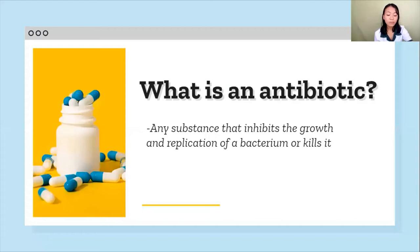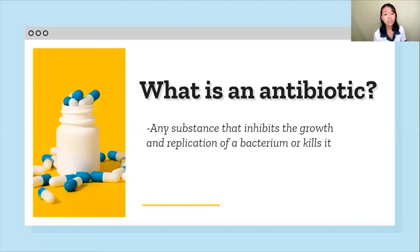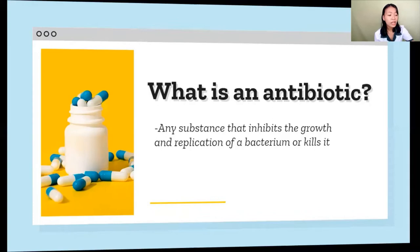Let us start by defining what an antibiotic is. An antibiotic is any substance that inhibits the growth and replication of a bacterium or kills it outright. Antibiotics are a type of antimicrobial designed to target bacterial infections within or on the body. This makes antibiotics different from antiseptics and disinfectants. Bacteria are not the only harmful microbes — fungi and viruses are targeted by antifungals and antivirals, respectively. Only substances that target bacteria are called antibiotics, while antimicrobial is an umbrella term for anything that inhibits or kills microbial cells, including antibiotics, antifungals, antivirals, and chemicals such as antiseptics.